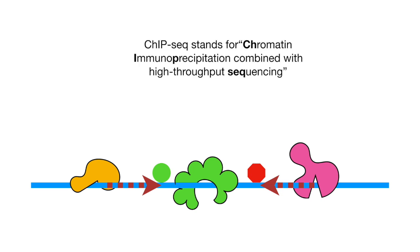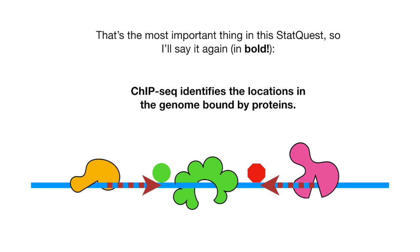ChIP-Seq stands for chromatin immunoprecipitation combined with high-throughput sequencing. It identifies the locations in the genome bound by proteins. That's the most important thing in this StatQuest, so I'll say it again in bold. ChIP-Seq identifies the locations in the genome bound by proteins.